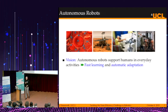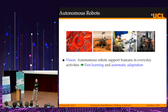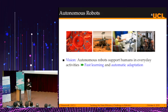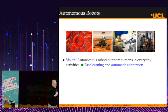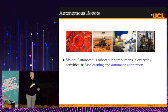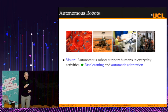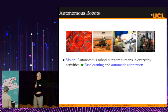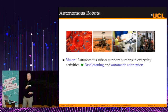When we talk about autonomous robots, we may think of nanorobots that can repair blood cells autonomously, or space exploration robots. But the vision we often have is autonomous robots that support humans in everyday activities such as elderly care, walking the dog, or taking the trash out. In order to implement this vision, these robots need to learn very quickly and automatically adapt to new situations.